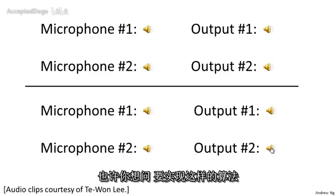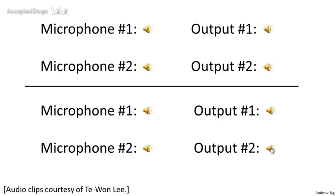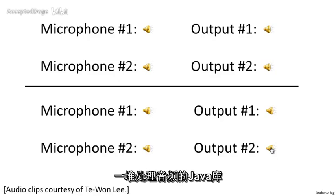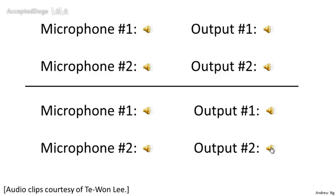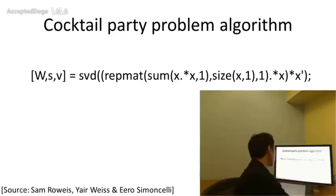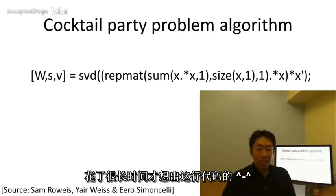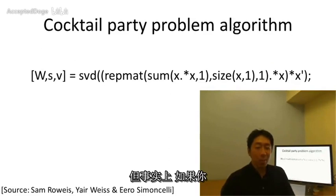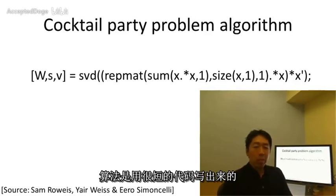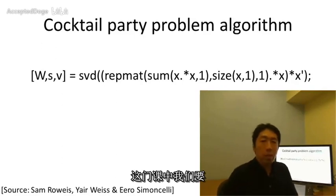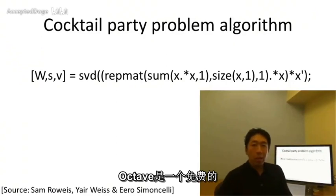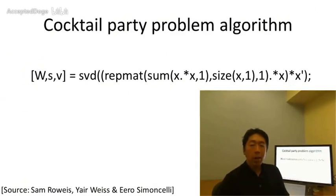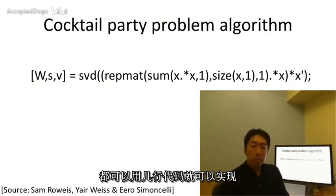You might ask: how complicated is it to implement this? It seems like you'd need to write a ton of code or link into complex C++ or Java libraries to process audio. It turns out the algorithm to do what you just heard can be done with one line of code. It did take researchers a long time to come up with this line of code, so it's not an easy problem — but when you use the right programming environment, many learning algorithms can be really short programs. This is why in this class we're going to use the Octave programming environment. Octave is free open-source software, and using Octave or MATLAB, many learning algorithms become just a few lines of code to implement.